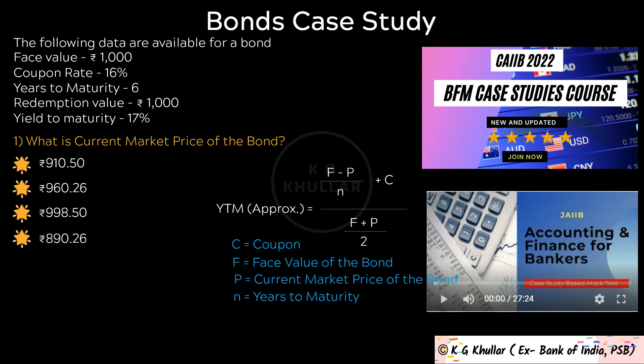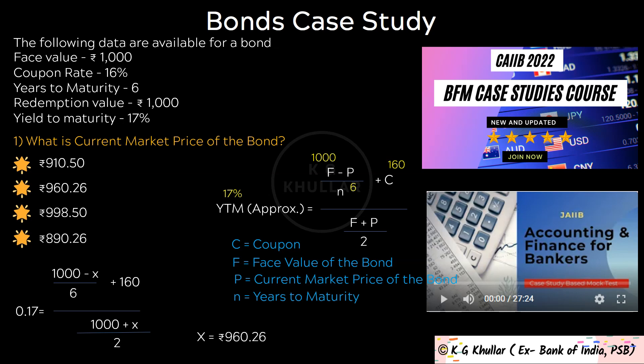Now as far as this question is concerned, yield to maturity is given as 17%, F (face value) is Rs.1000, P (current market price) we have to find — let's assume it as X — and N (years to maturity) is 6 years. After substituting all these values in the formula, we get 0.17 equals (160 plus 1000 minus X divided by 6) divided by (1000 plus X divided by 2). On solving for X, we get X equals 960.26. So the current market price of the bond is Rs.960.26, and the correct option is option B.